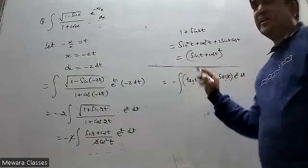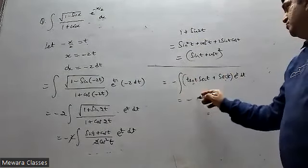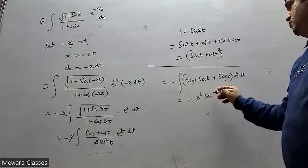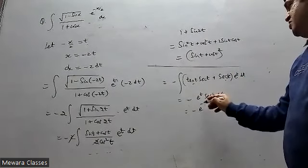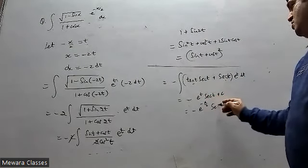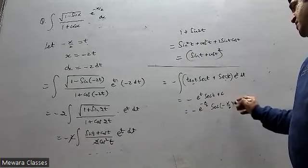Plus sec t tan t. Put value of t as minus x by 2.